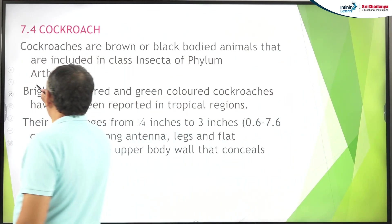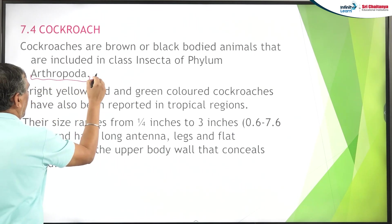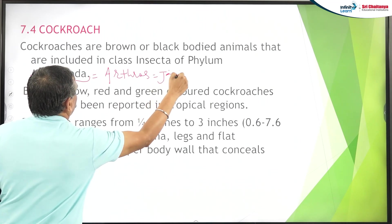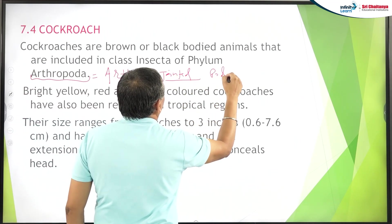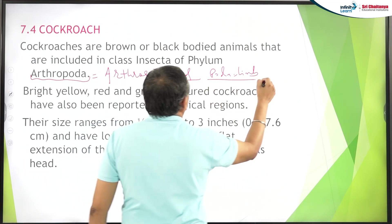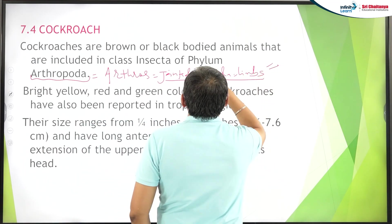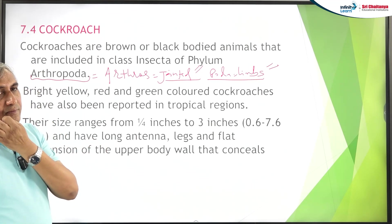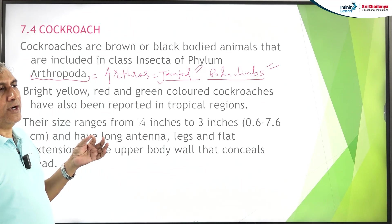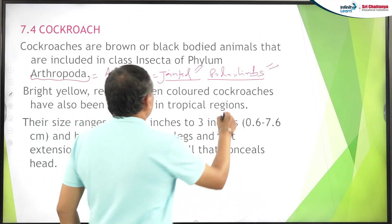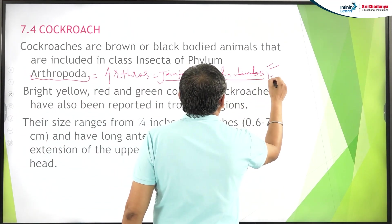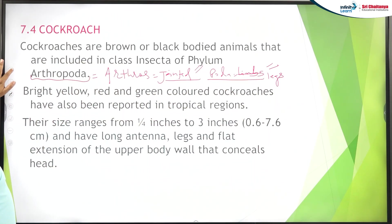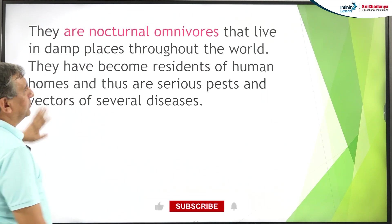The phylum of the cockroach is Arthropoda. 'Arthros' means jointed and 'poda' means limb — it is having jointed limbs, that is why it is known as Arthropoda. The name of the phylum is Arthropoda because it is having jointed legs.